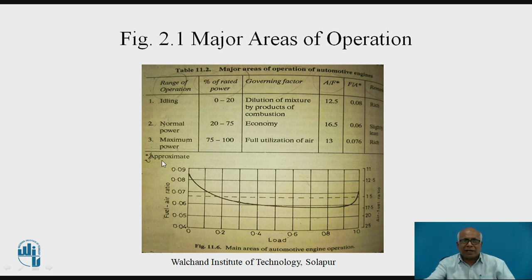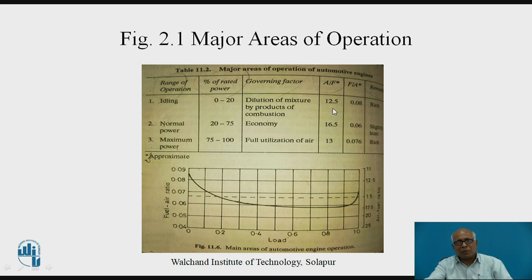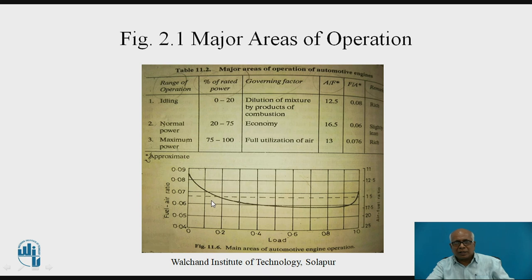Looking at the table and graph, there are different conditions shown. For idling and low load — 0 to 20% of rated power — the problem is dilution of the mixture due to products of combustion. So the air-fuel ratio should be richer, around 12.5:1. Graphically, in the 0 to 20% load range, a richer air-fuel ratio is required.